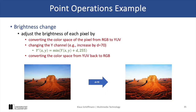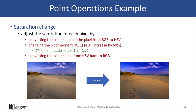We start with brightness adjustment. We can achieve this by first converting RGB to YUV and then modifying the Y channel, which is the luminance channel representing brightness. For example, we can increase it by some absolute value and then convert it back to RGB. Saturation adjustment can be achieved by converting RGB to the HSV color space, then increasing the saturation channel by, for example, 60%, and converting back to RGB.